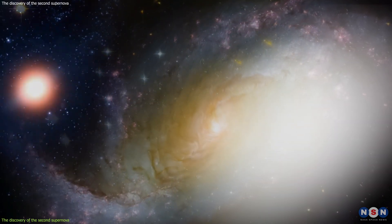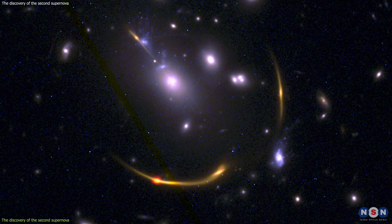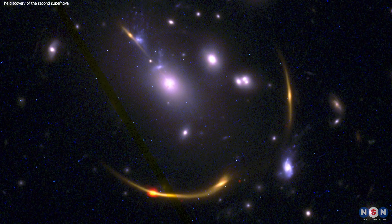So, the second supernova that Webb detected is actually the same supernova that Hubble detected, but in a different image of the galaxy, and with a time delay of seven years. This means that we are seeing the same star explode twice, but at different times, thanks to the cosmic mirage created by the cluster. Isn't that amazing?